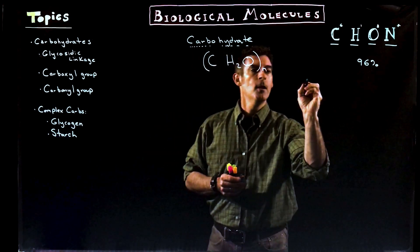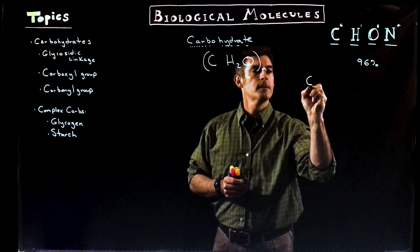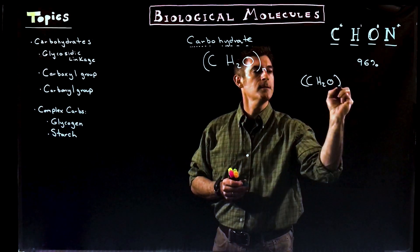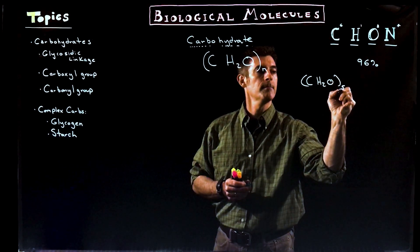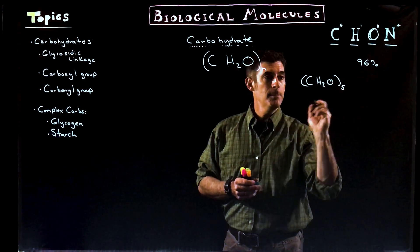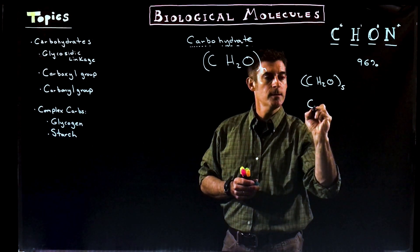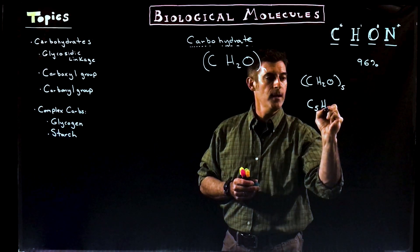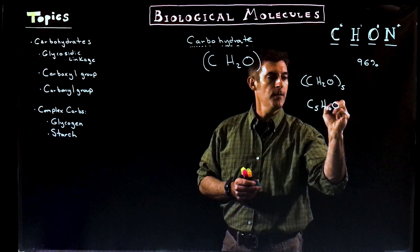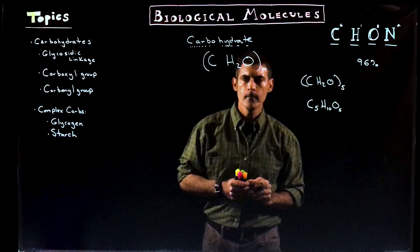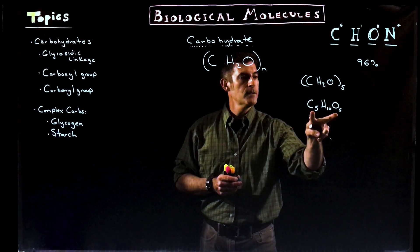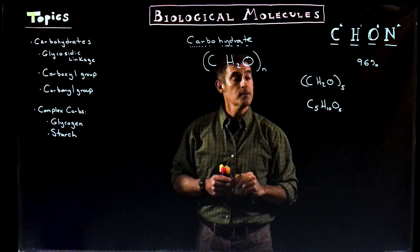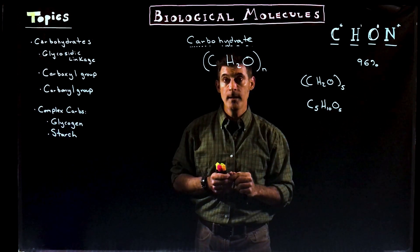For example, we could have (CH₂O) with a 5 outside. What does that mean? The relationship inside is C₅, H₂ times 5 equals 10, and O is also 5. The thing to keep in mind is there's always the same number of carbons and oxygens, and double the number of hydrogens. That's part of the definition of a carbohydrate.